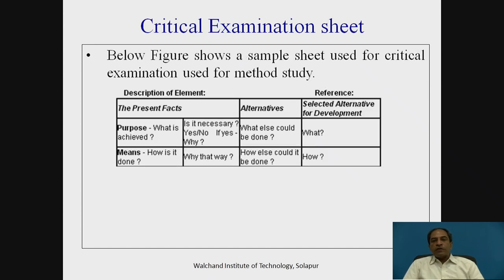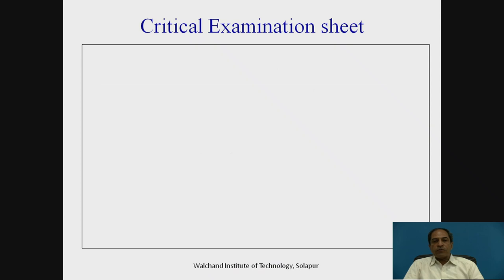A sample sheet for critical examination is structured as follows — for Purpose: 'What is achieved?', 'Is it necessary? Yes/No', and 'What else could be done?'; for Means: 'How is it done?', 'Why is it done that way only?', and 'How else could it be done?' These summarize the primary and secondary questions for both purpose and means.